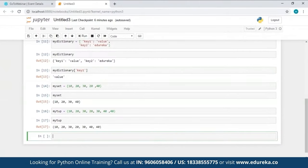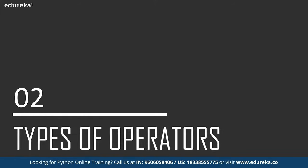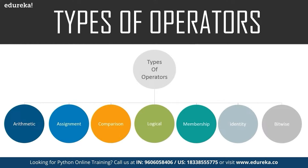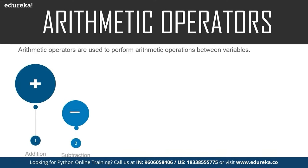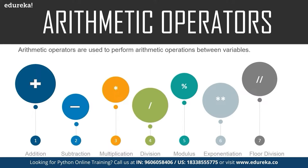Python has several types of operators: arithmetic, assignment, comparison, logical, membership, identity, and bitwise. Arithmetic operators are used to perform arithmetic operations. The symbols are: + (addition), - (subtraction), * (multiplication), / (division), % (modulus), ** (exponentiation), and // (floor division).